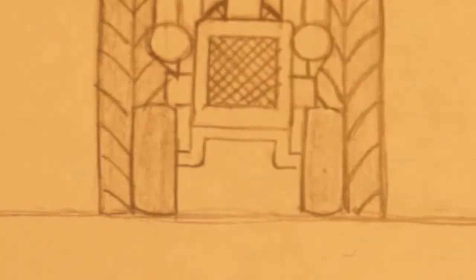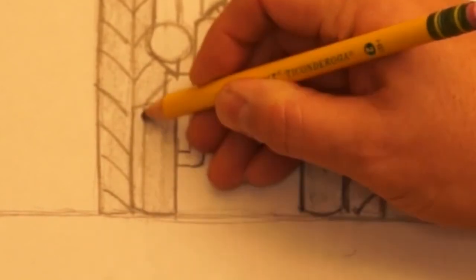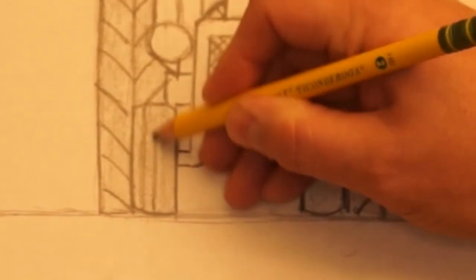The front tire, the tread is going to be straight lines. Just space them out evenly.